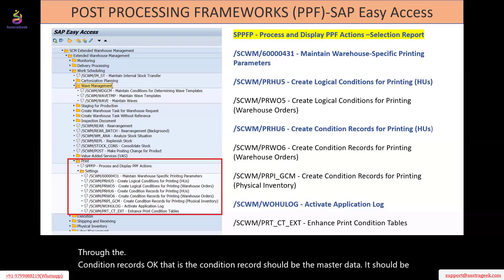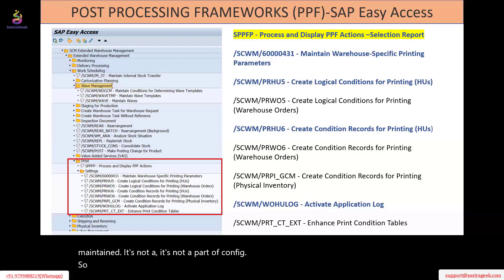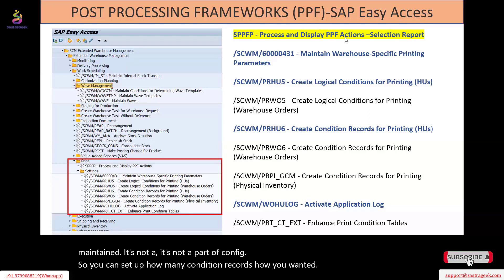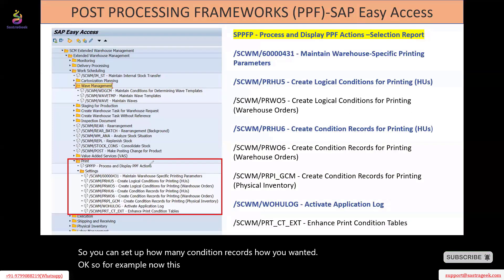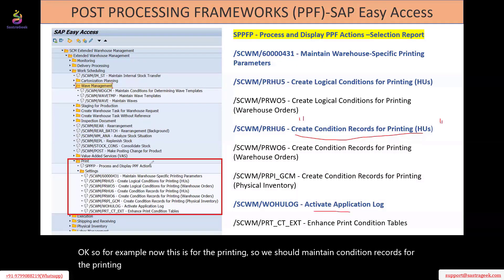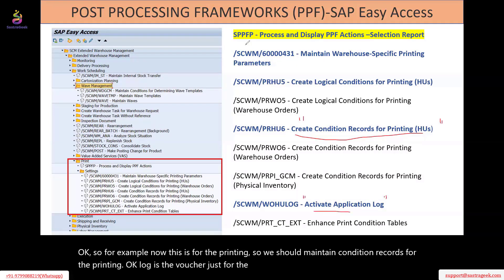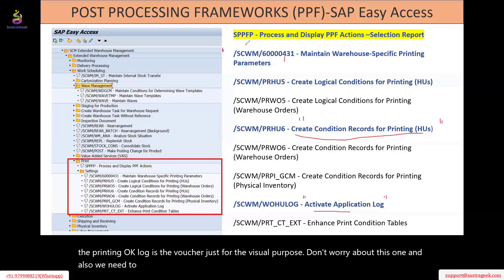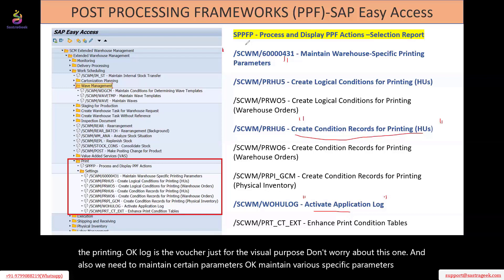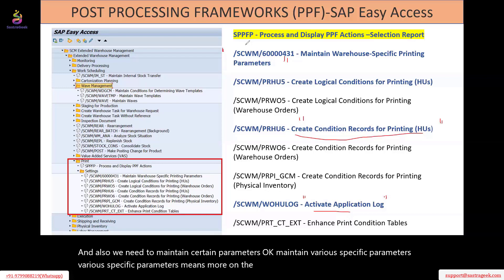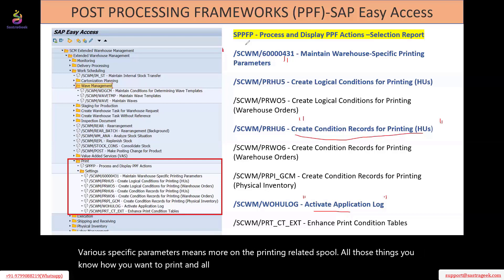You can set up as many condition records as you want. For printing, we should maintain condition records for the printing. Log is okay just for visual purposes. We also need to maintain certain specific parameters — more on the printing-related spool settings — how you want to print and log. The spool settings also need to be configured.